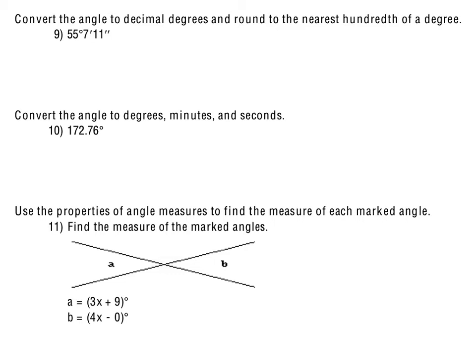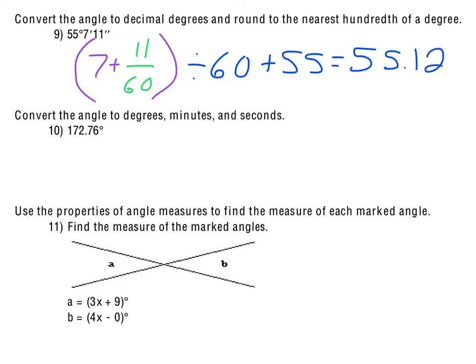For number 9, we're converting 55 degrees, 7 minutes, 11 seconds to decimal degrees rounded to the nearest hundredth. So the way we start this is we divide the 11 by 60. That will convert those seconds to minutes. From there, we add the 7 minutes in. So now we have minutes, and what we do is we divide this by 60 as well, and that will convert that to degrees, so that ends up being approximately 0.119 degrees. And so then we add the 55 back in, and so we get the 55.12 degrees once we round that, because we're talking 0.119 is what we get when we divide this whole, or do this whole piece.